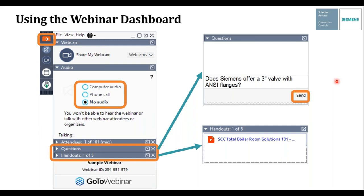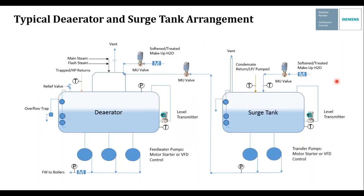I'd like to start with an overview of a typical surge tank and deaerator layout. Surge tanks and deaerators are some of the largest auxiliary equipment you'll find in a typical steam plant — in my opinion, they're one of the most important pieces of equipment. I look at the DA tank as the heart of the boiler room. We'll follow this layout from right to left, starting with softened or treated makeup water coming into a surge tank. Surge tanks, by the way, are atmospheric tanks.